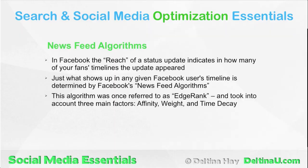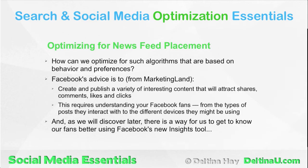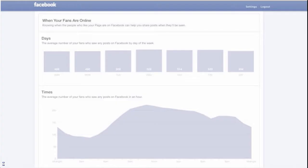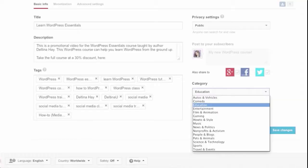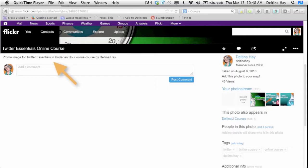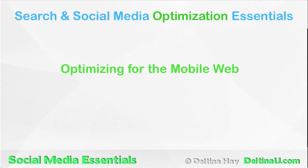We also take a closer look at Facebook's feed algorithm, how to optimize different types of content for discoverability, and how to use Facebook Insights to improve your efforts. We then discuss optimizing content for other social media platforms, such as optimizing blog posts, videos for YouTube, images for Flickr, and content within document sharing sites like Scribd and SlideShare.